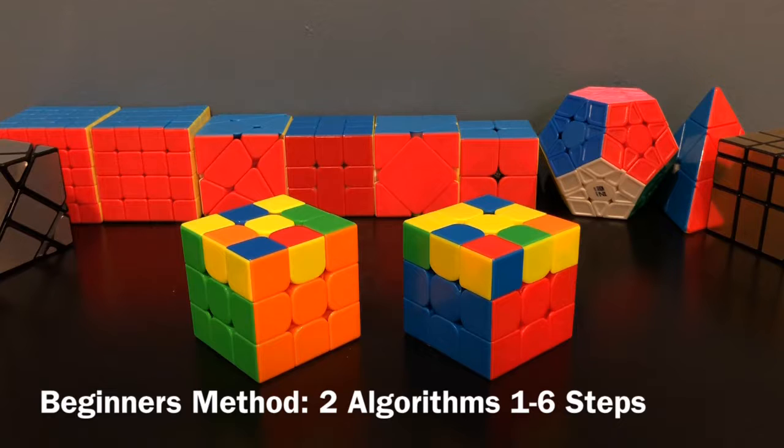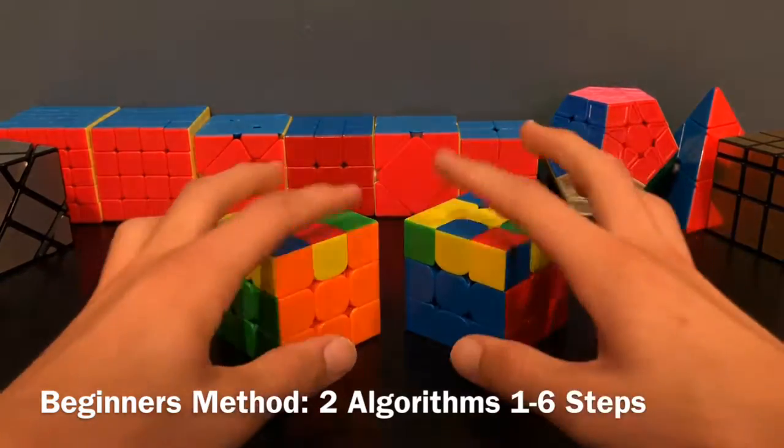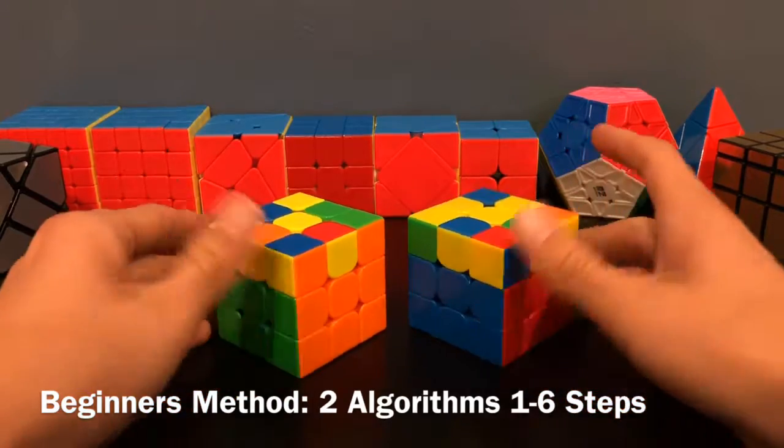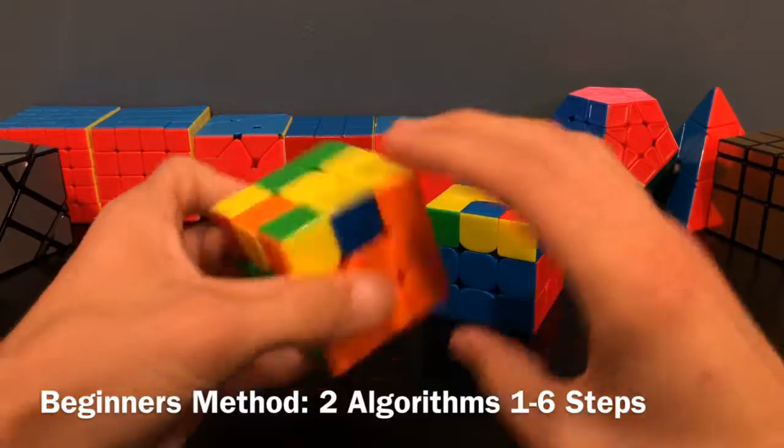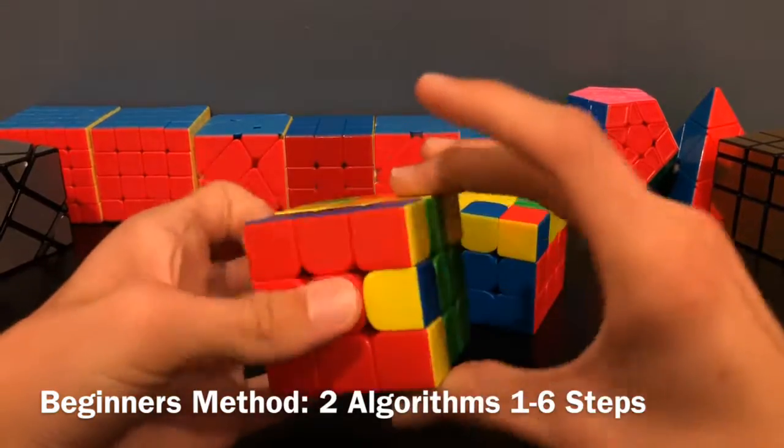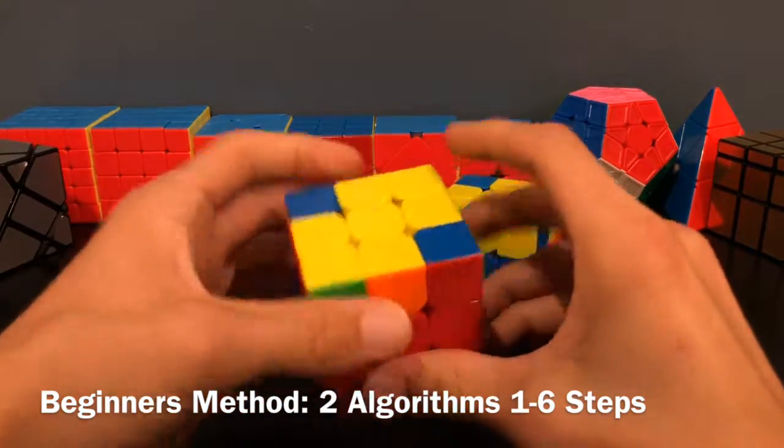Now when I say beginners method, I mean that it's going to be the easiest to learn. If you want to get fast times, this might not be the method for you. I've already created a video on this method and I'll provide a link in the description. So you will only use two algorithms for this method to orient the entire last layer. However, you're going to have to repeat these algorithms a few times.